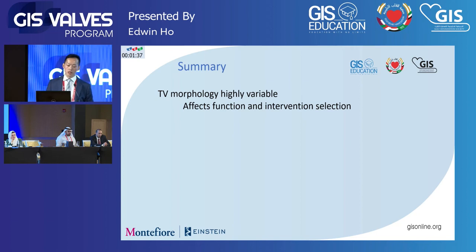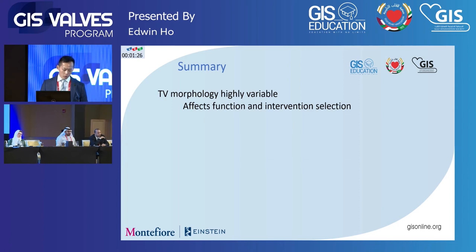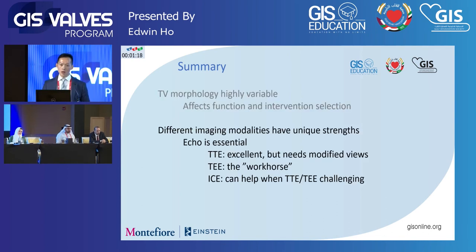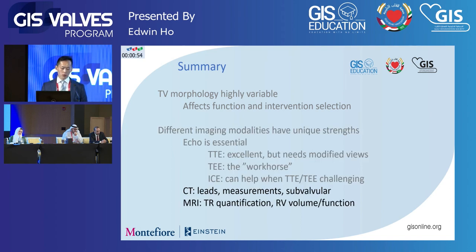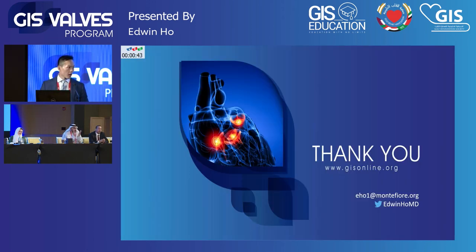In summary, we covered the morphology of the tricuspid valve and how variable it can be — particularly in pathologic states — which affects function and intervention selection. Different imaging modalities have their own unique strengths. Echo is still the cornerstone: TTE is essential with modified views needed to evaluate the valve end to end; TEE is the workhorse with clearly defined views; ICE is very helpful when other modalities are difficult. CT is particularly helpful for leads, precise measurements, and subvalvular analysis. MRI provides mostly functional data — TR quantification and RV volume and function. Thank you, happy to take questions.